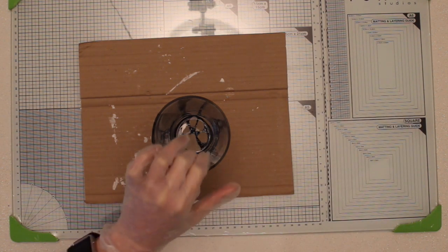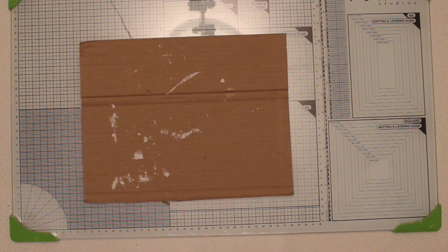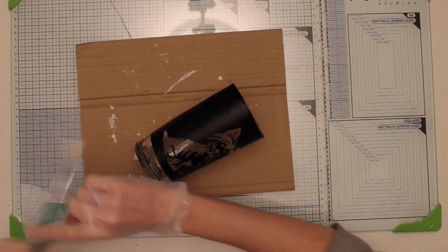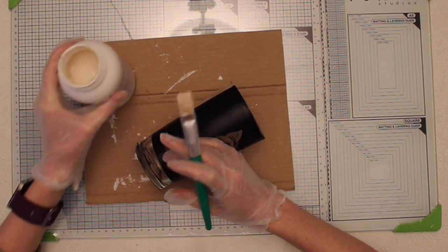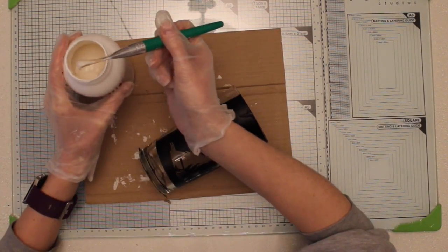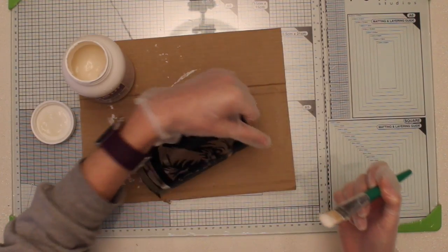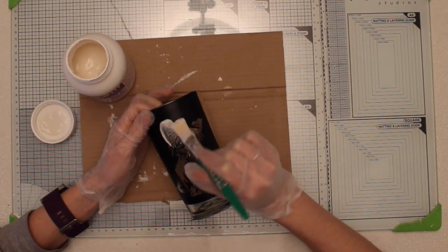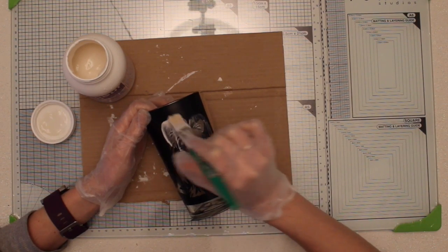So whenever using etching cream of any kind always make sure that you protect your hands. So I'm just wearing some gloves. Here and I've got the glass and with a brush, I've got a set of three of these brushes for a pound from Hobbycraft. They're quite nice, the bristles on them, they're quite thick and all I'm going to do is literally work the cream over the image.